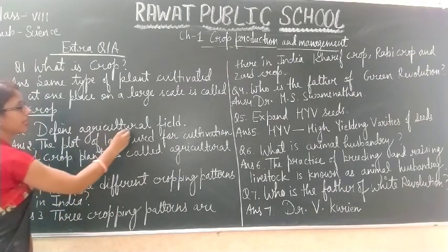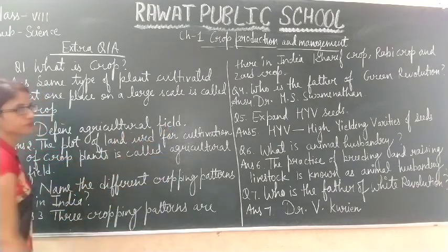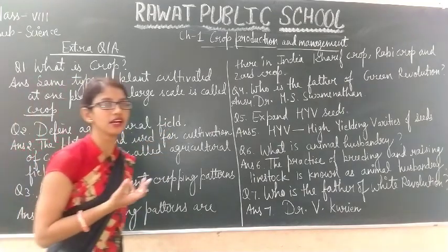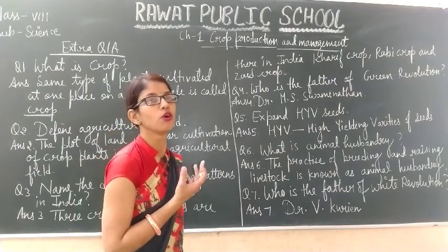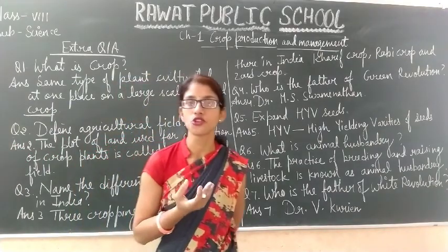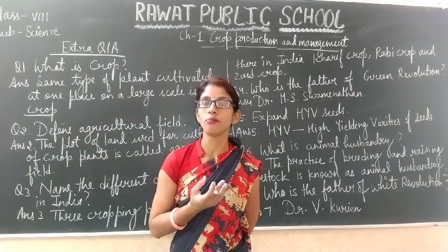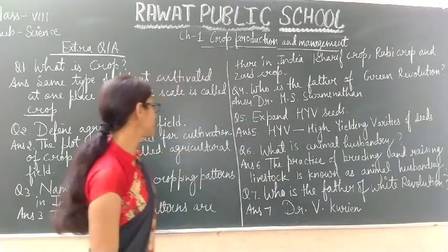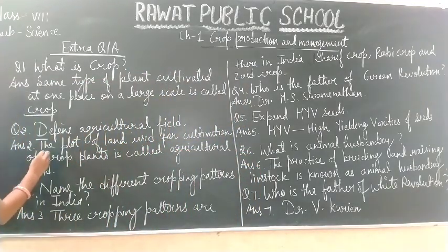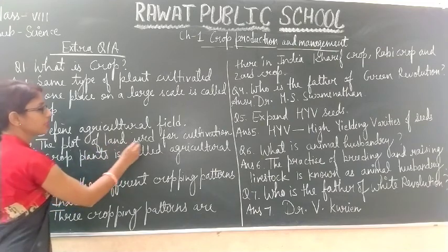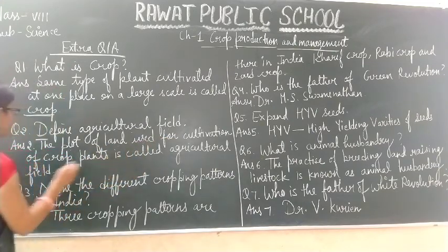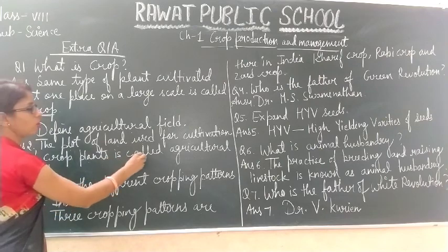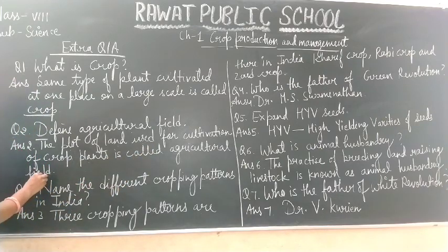Question two: Define agricultural field. An agricultural field is an area or patch of land on which the crop or plant is grown. The plot of land used for cultivation of crop plants is called an agricultural field.